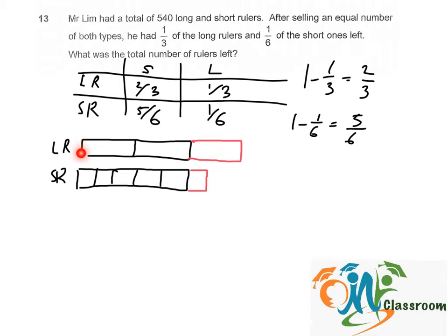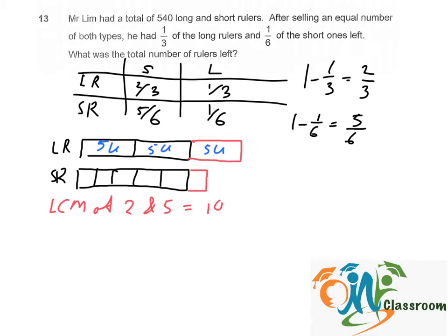So now we know that two units of the long rulers is equal to five units of the short rulers. To divide them into equal unit sizes, we need to find the lowest common multiple of two and five, which is ten. So we have to divide the two big units into ten units — that will be five units each. And we have to divide the five small units into ten units as well, so ten divided by five means each unit is further divided into two.